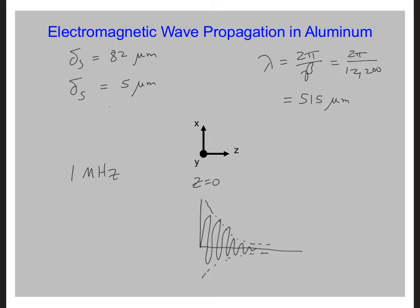This means that the wavelength of the EMP at 1 megahertz in air would be 300 meters. But in the aluminum, the wavelength has reduced to just 515 micrometers. So that's another characteristic of a conductor is that it greatly shrinks the wavelength of the electromagnetic wave.